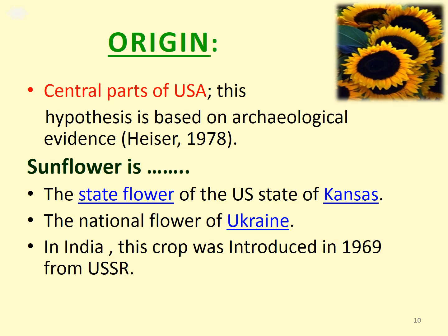Sunflower originated in the central parts of the USA. This hypothesis is based on archaeological evidence. Sunflower is the state flower of the US state of Kansas and the national flower of Ukraine. In India, this crop was introduced in 1969 from Russia or USSR.